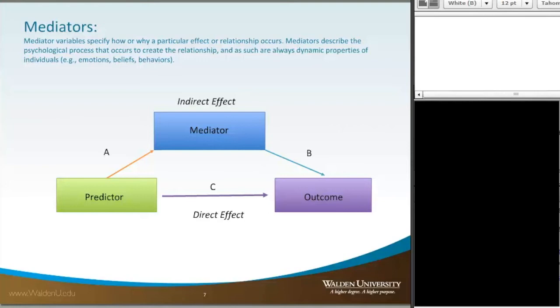Mediator variables specify how or why a particular effect or relationship occurs. Mediators describe the psychological process that occurs to create the relationship in social science studies. As such, they explain the dynamic properties of different individuals - for instance, emotions, beliefs, and behaviors - for those of you who are working with social science research.